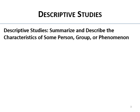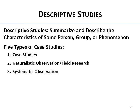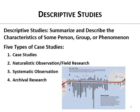There are five types we'll talk about today: case studies, naturalistic observation (also called field research), systematic observation, archival research — which includes fun examples like analysis of folks who jumped off the Golden Gate Bridge — and finally survey research, which gets its own lecture.